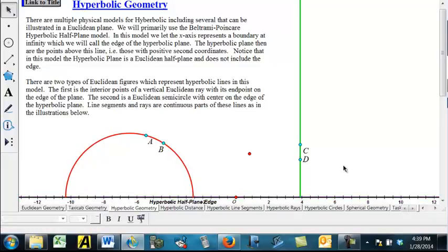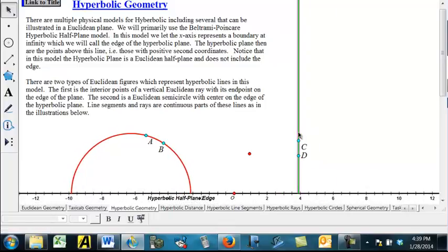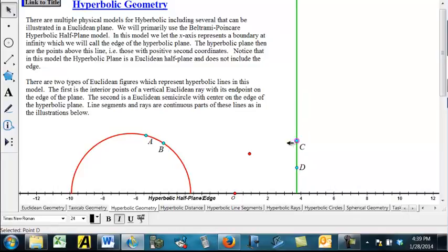Okay, now what do lines look like? Well, there are going to be two types of objects, two types of Euclidean objects that turn out to be lines in hyperbolic geometry, at least this model of hyperbolic geometry. And one will be a ray, a ray without its endpoint. So do not include this point down here on the edge, of course. We never include points on the edge. But all other points of a ray that's going straight up perpendicular to that edge, we're going to call that a vertical line. And so that's considered one type of line.